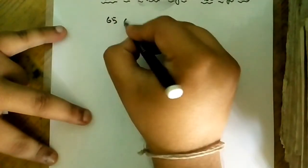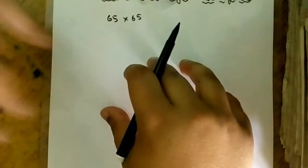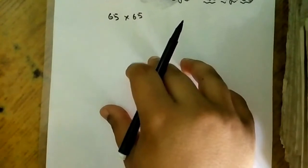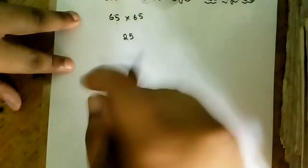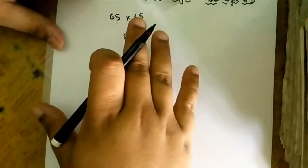Now I have to square this number, so I have to do 65 into 65. The first step is to multiply 5 into 5. Now 5 into 5 will result as 25.